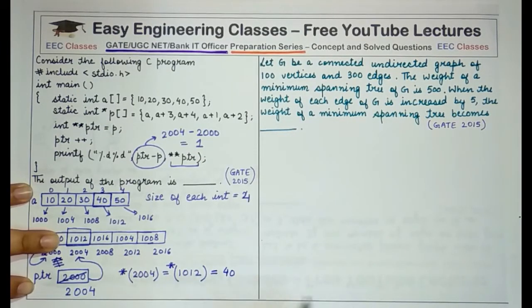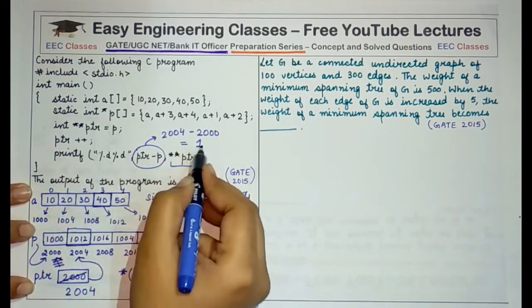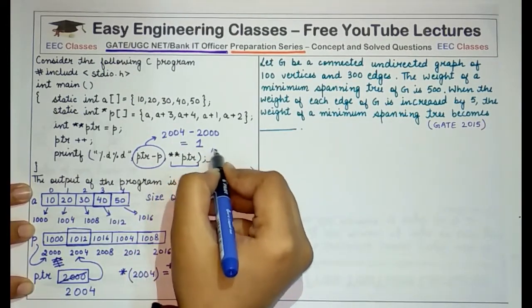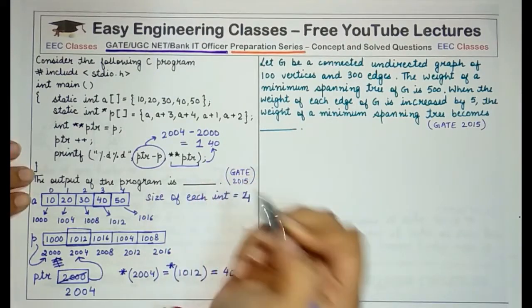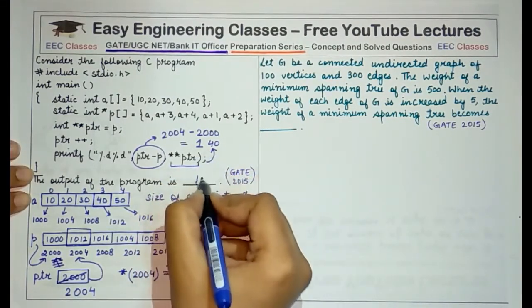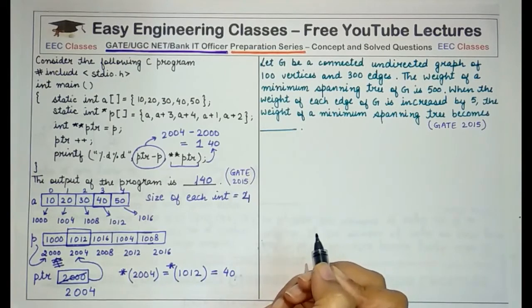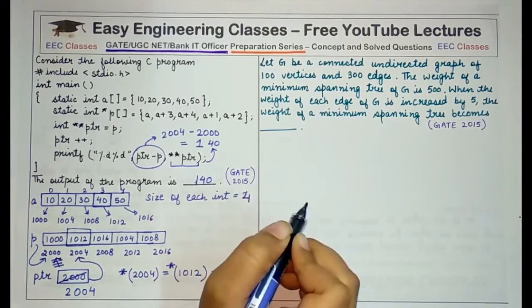And the second part of the printf is star star PTR. Now star is an operator that gives you the value present at a particular address. So star of 2004 means the value present at address 2004 which is 1012. Now we have another star operator, another dereferencing operator. So another star of 1012 means the value present at 1012. And the value that is present at 1012 is 40. So this would give me 40. So the total value that would be printed is 140.